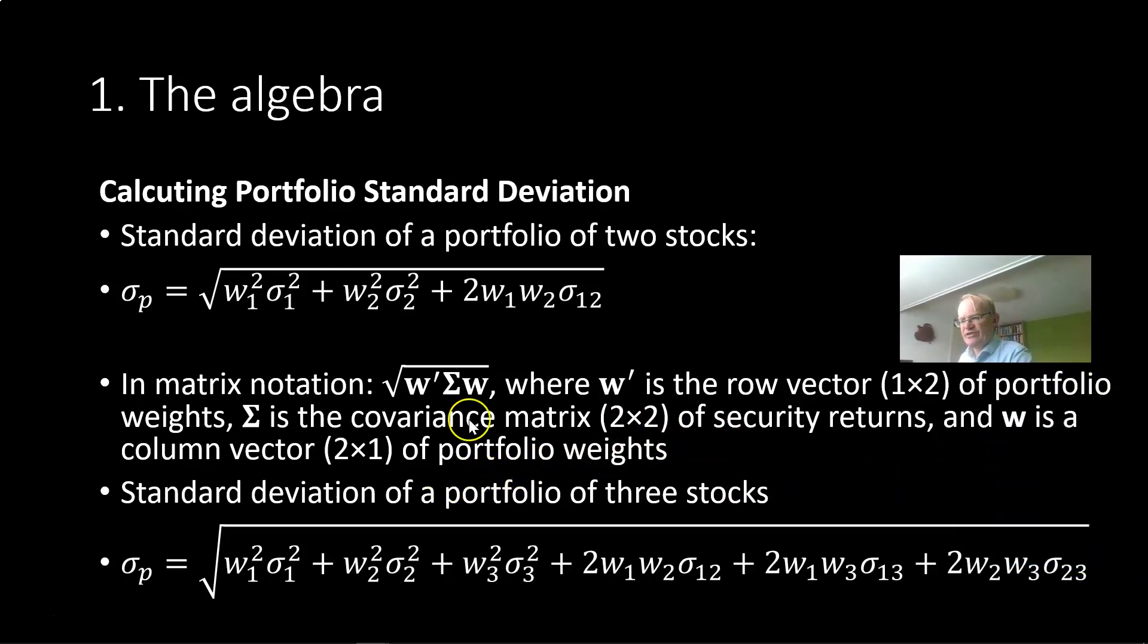In a similar fashion we can write the standard deviation of a portfolio with three stocks. So that will give us a third term with the squared of the weight times the variance of the third stock and we get two additional covariance terms which are presented here and over here.